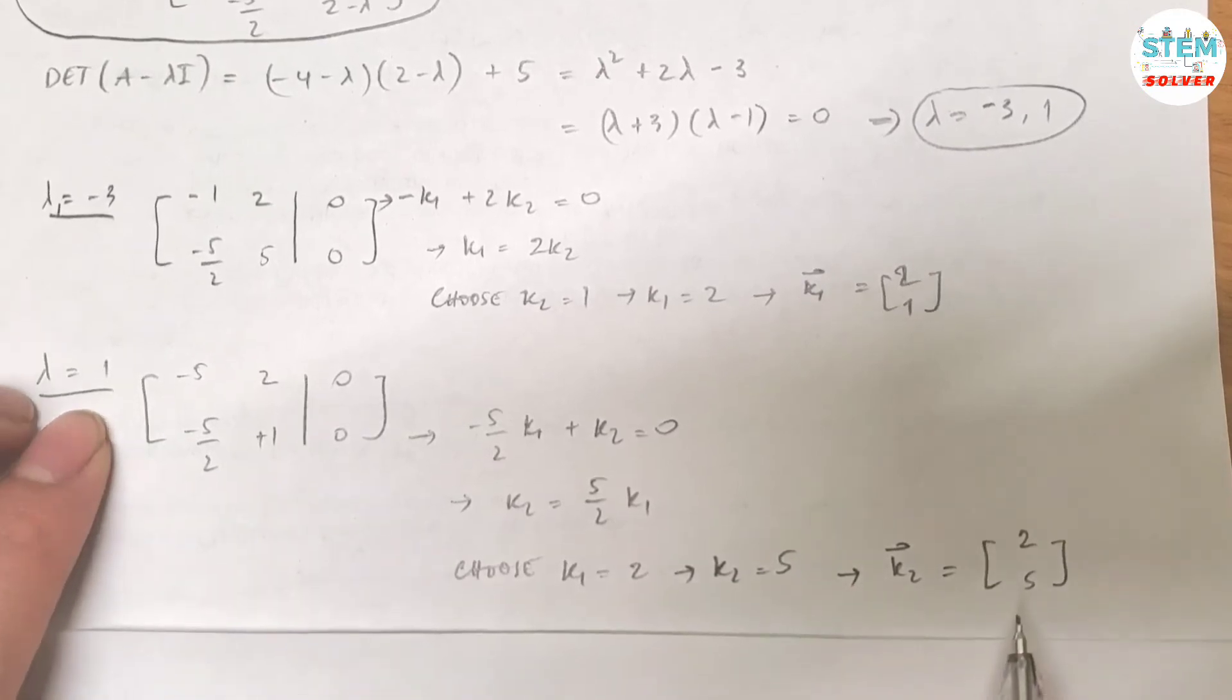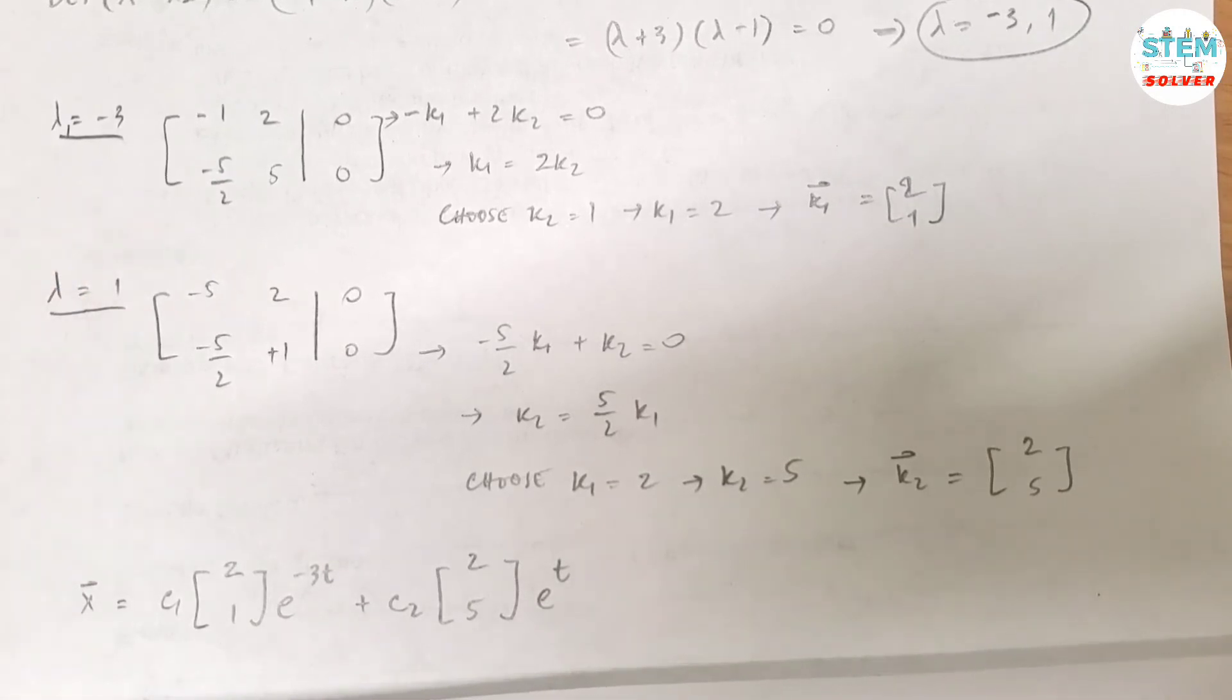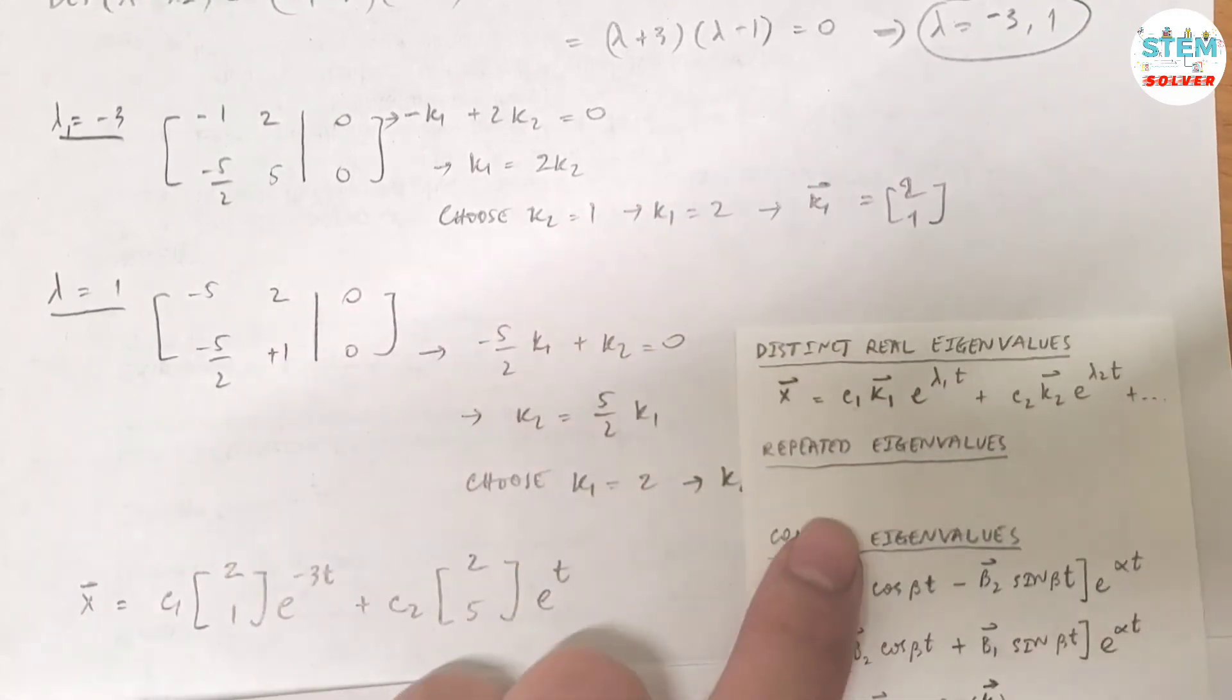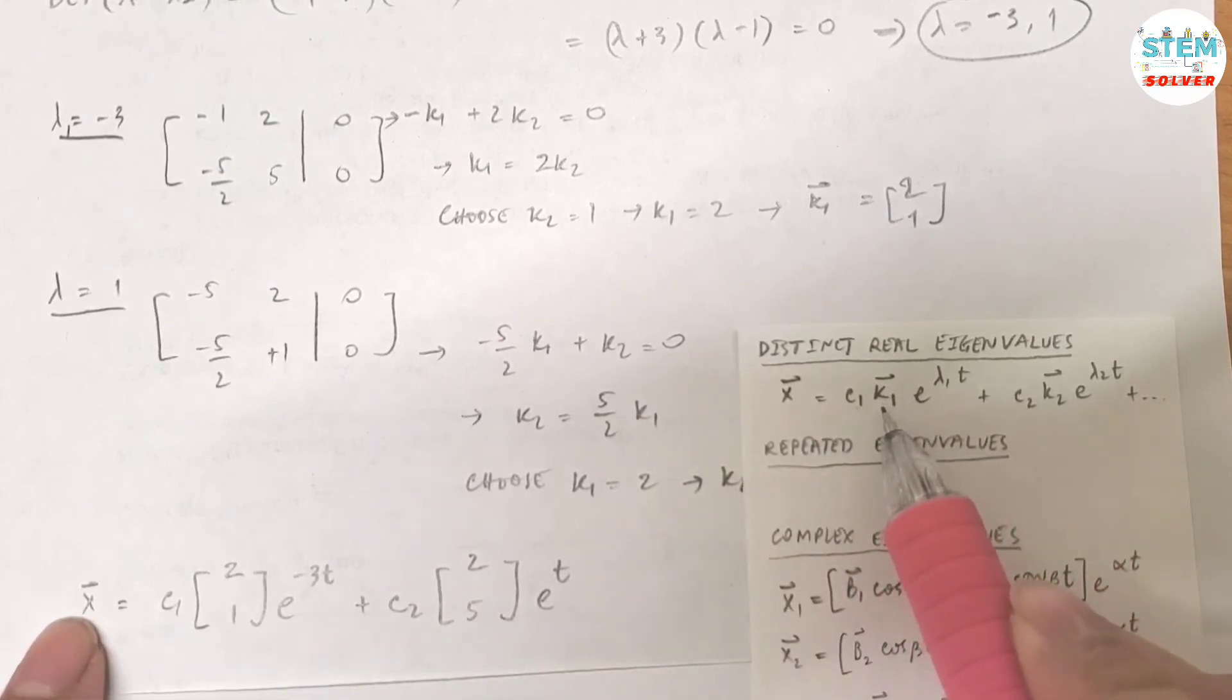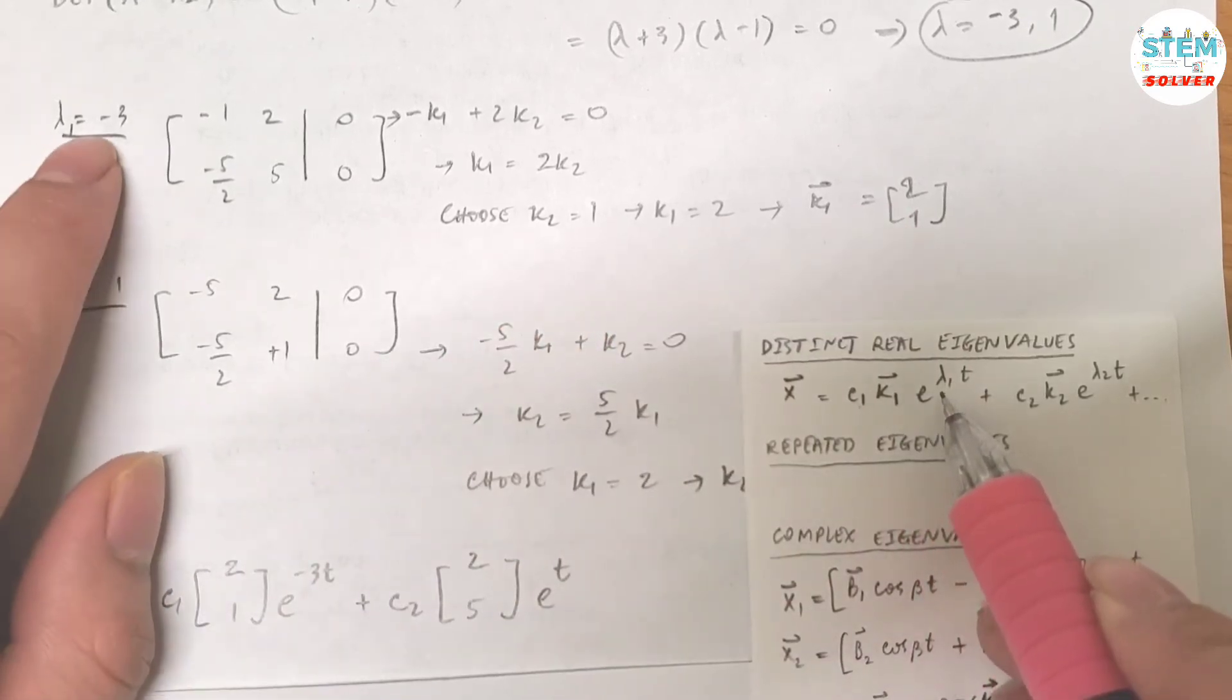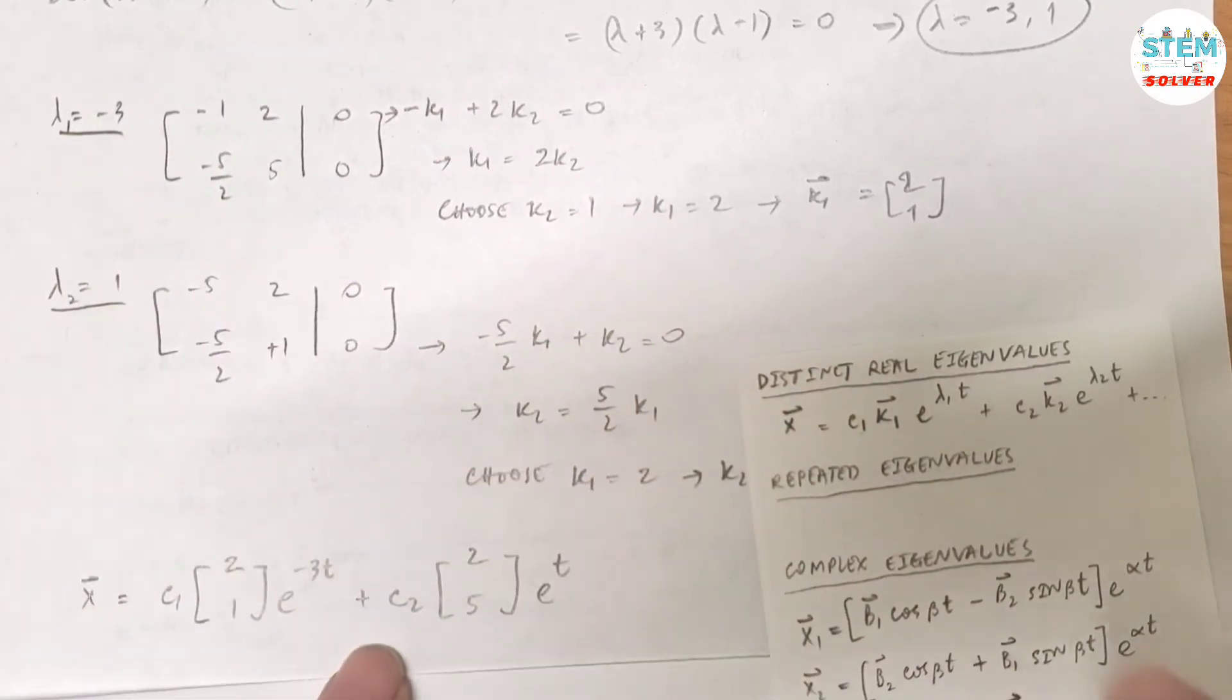And then now it comes to your final solution of the problem. So because you have distinct real eigenvalues, which means your solution will be written in this form. So vector x equals c1 times k1, k1 is this one, 2, 1, e to the lambda 1t. Lambda 1t so e to the negative 3t.